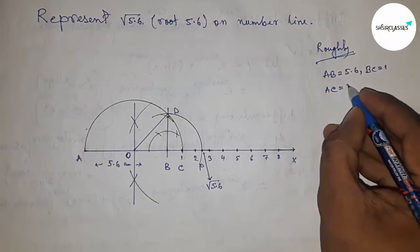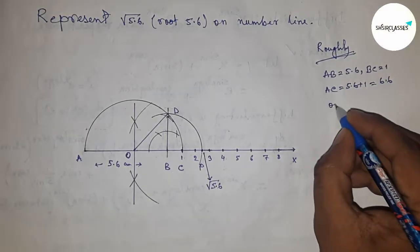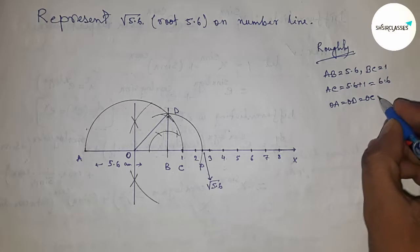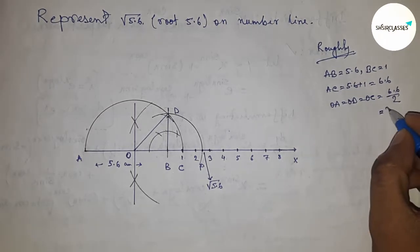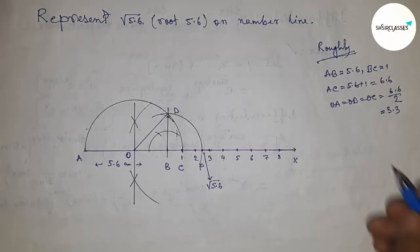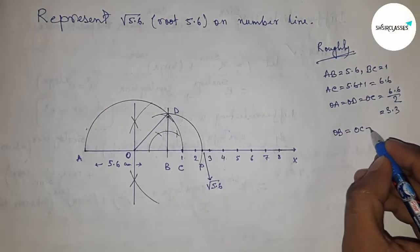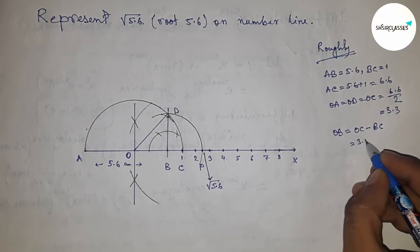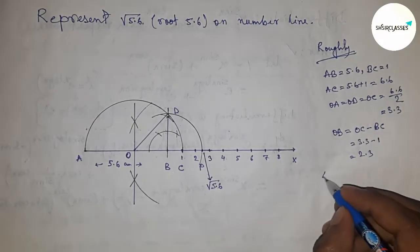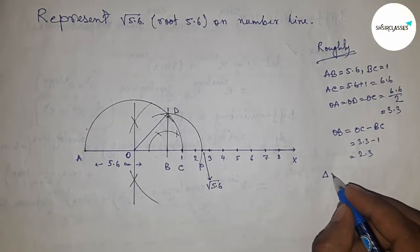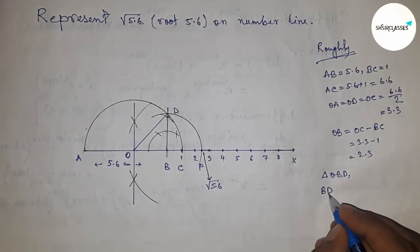Now let's verify this calculation. Given AB equal to 5.6 and BC equal to 1, so AC equals 5.6 plus 1, which is 6.6. Therefore OA = OD = OC = 6.6 divided by 2, that is 3.3. Now OB equals OC minus BC, which gives 3.3 minus 1.0 = 2.3.